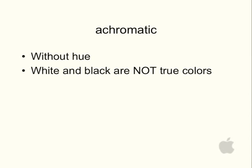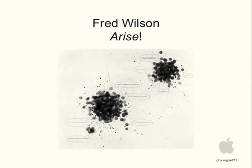Achromatic means without hue. White and black are not true colors. Chroma is color, so achromatic is without color. Any time you see the letter A in front of something, it means without. Here's Fred Wilson's piece, Arise. This would be considered achromatic — it's black and white, without color.